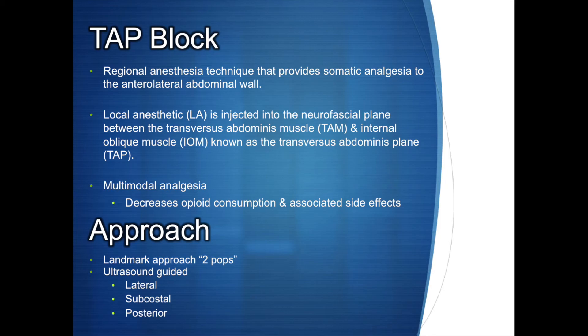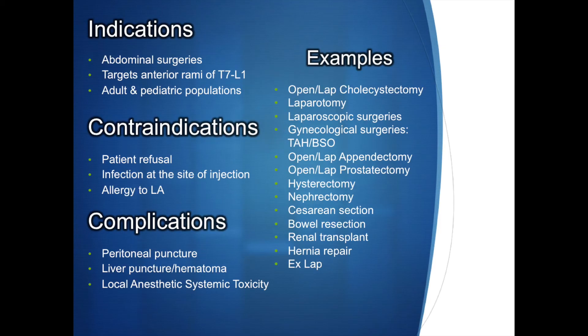There are different approaches for the TAP block, and small modifications in needle insertion sites can result in clinically significant differences in abdominal analgesia. The block relies on the injection of local anesthetic within the TAP in order to block the anterior rami T7 to L1, which innervate the anterior lateral abdominal wall.